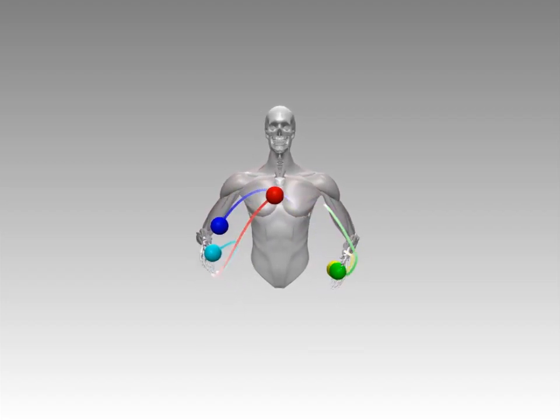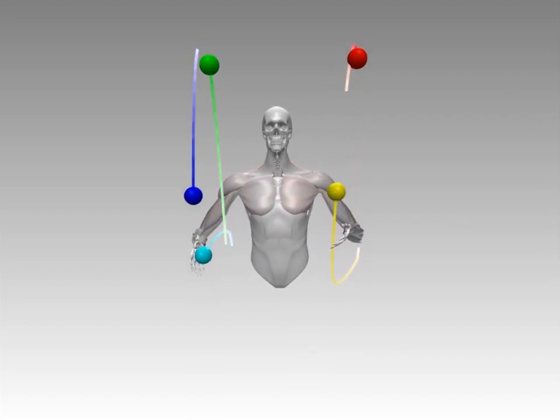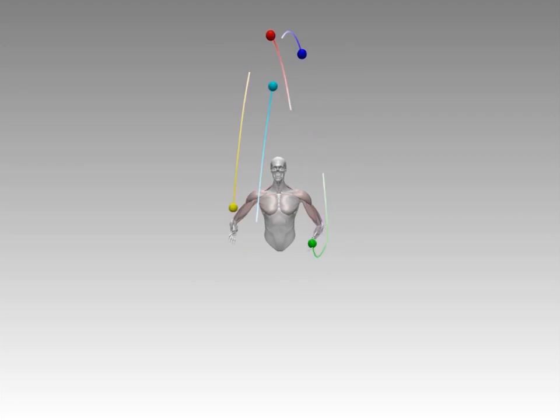We propose a framework for the simulation and control of the human musculoskeletal system. The juggler is driven by volumetric muscles. Active muscles are shown in red.